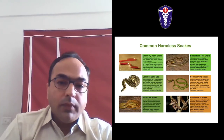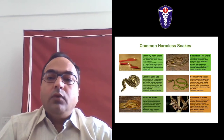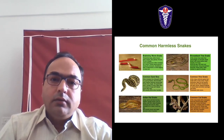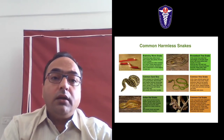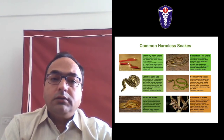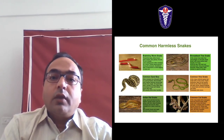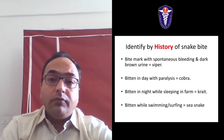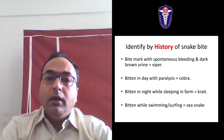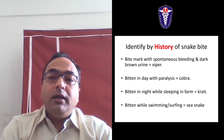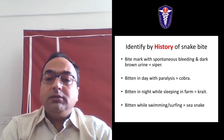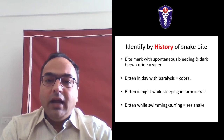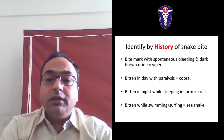There is also the common cat snake and worm snake. One can get confused with the worm snake - whether it is a worm snake or a krait. We identify by the history of the snake bite: bite mark with spontaneous bleeding and dark brown urine suggests vasculotoxic envenomation. Bitten in the daytime with paralysis - that is cobra. Bitten at night while sleeping in a farm - that is mostly krait.